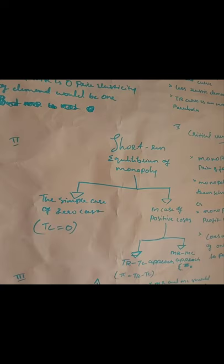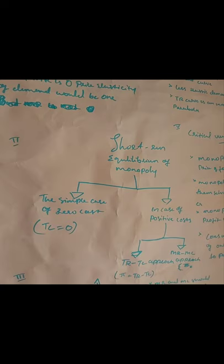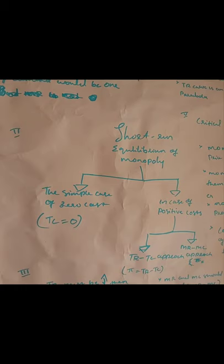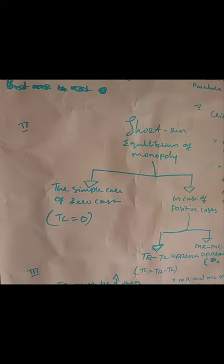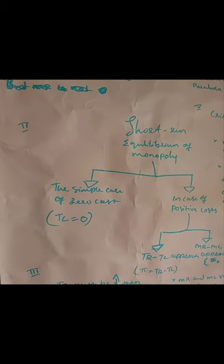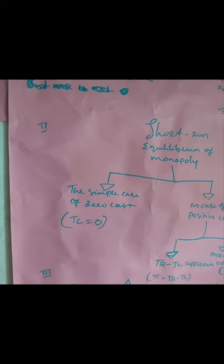There are two conditions for short-run equilibrium of monopoly: simple case of zero cost, and case of positive cost. In the zero cost case, the cost of production is zero, so TC equals zero. Monopoly reaches equilibrium when profit is maximum. Profit equals TR minus TC, which equals TR minus zero, which equals TR. Since TC is zero, the maximum profit equals total revenue, and equilibrium quantity will be half of market demand when price is zero.